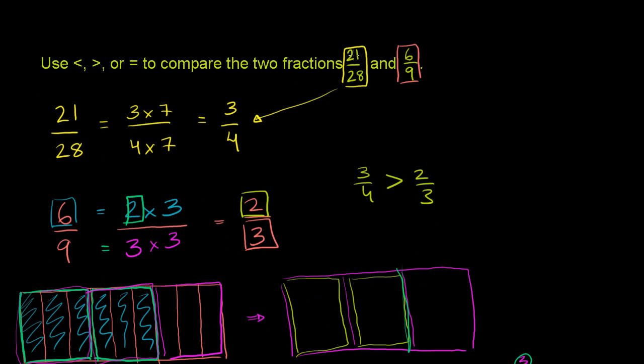Now they want us to compare these two fractions. So 21 over 28 is the same thing as 3/4. So 21 over 28 is going to be greater than 2/3, which is the same thing as 6 over 9. And so we are done.